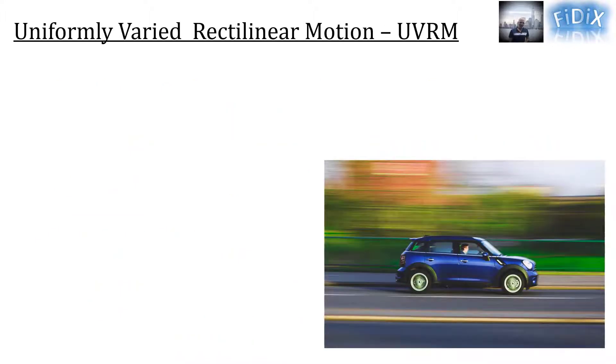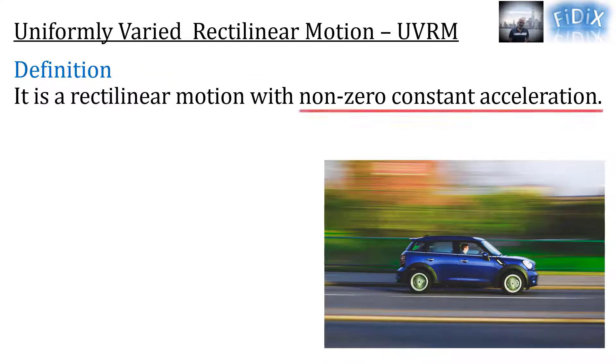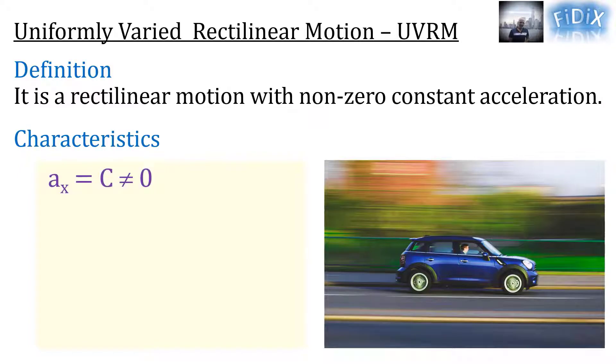The uniformly varied rectilinear motion is a rectilinear motion with non-zero constant acceleration. In this case, ax is constant different from zero and its primitive vx equals ax·t plus vx₀.